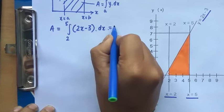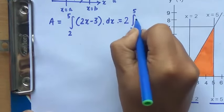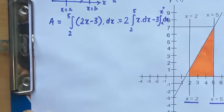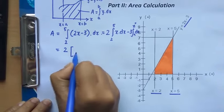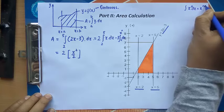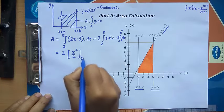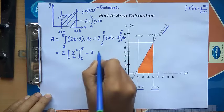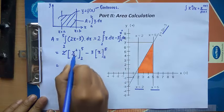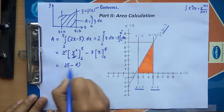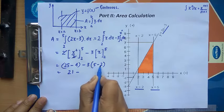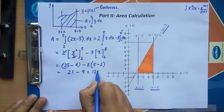Expanding, this becomes 2 times the integral from 2 to 5 of x dx, minus 3 times the integral from 2 to 5 of dx. Using the power rule — integral of x to the power n dx equals x to the power n+1 upon n+1 — the integral of x gives x squared upon 2, and the integral of 1 gives x. Evaluating: 2 and 2 cancel, giving (25 minus 4) minus 3 times (5 minus 2), which is 21 minus 9, giving us 12 square units.